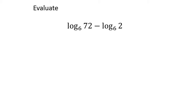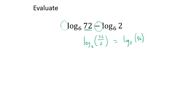Here's a similar problem but with a minus sign, so we use the quotient rule. Log base 6 of 72 minus log base 6 of 3 becomes log base 6 of (72 divided by 3), which is log base 6 of 36. That's log base 6 of 6 squared, so we bring the 2 down: 2 times log base 6 of 6, which is 2 times 1, giving an answer of 2.